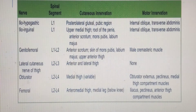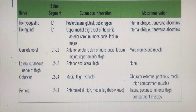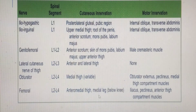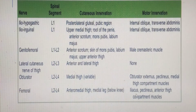The obturator nerve, root value L2–L4, supplies cutaneous sensation to the medial thigh and is the dominant motor nerve of the medial compartment of the thigh — supplying obturator externus, pectineus, adductors, and gracilis. The femoral nerve, root value L2–L4, gives cutaneous sensation to the anterior and medial thigh, and via the saphenous nerve to the medial leg and foot. It supplies the anterior thigh muscles: iliacus, pectineus, sartorius, and the quadriceps.